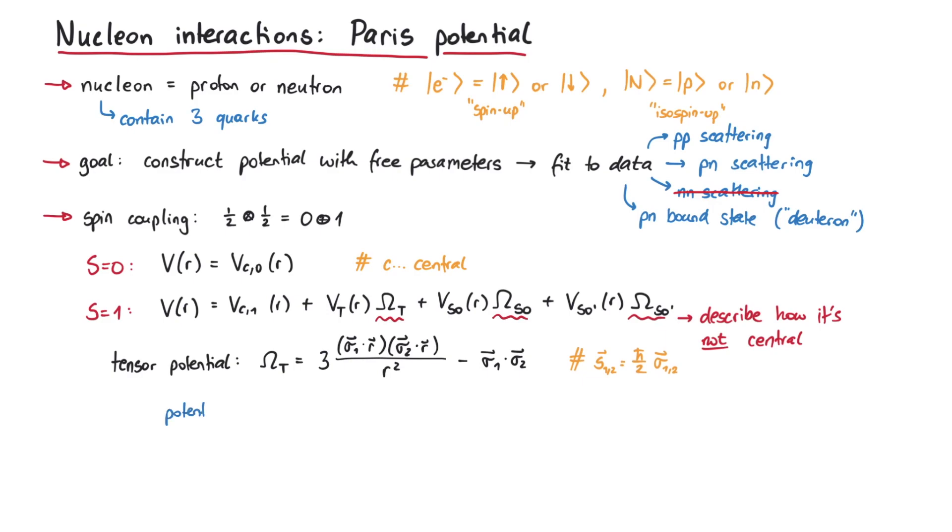This potential structure looks very similar to the potential between two magnetic dipoles. The potential energy of a magnetic dipole, M1, in a magnetic field is given by minus M1 times B. Such a magnetic field can be created by another magnetic dipole, which we call M2. Therefore, M1 times B looks similar to the tensor potential term in the Paris potential.